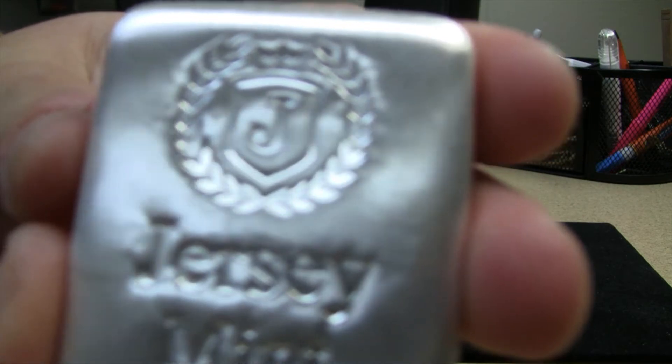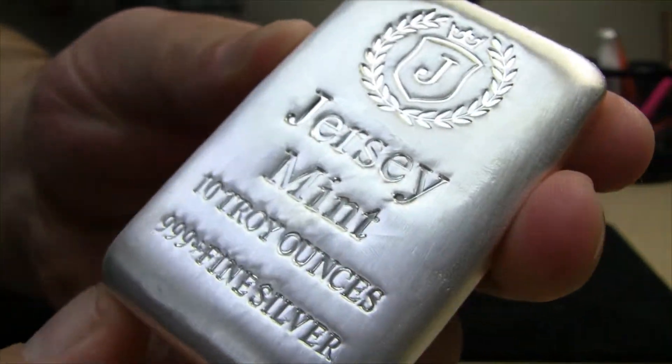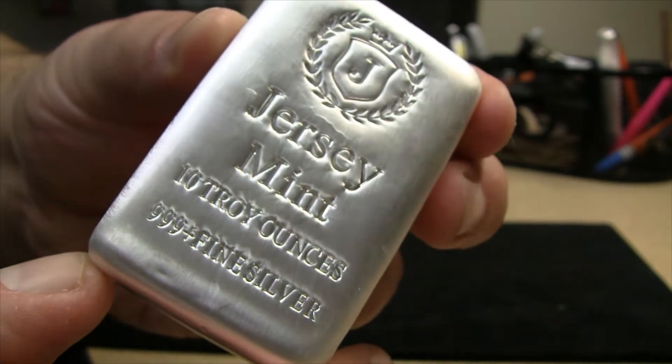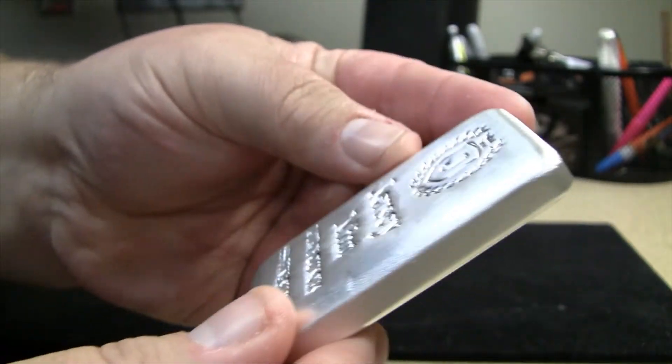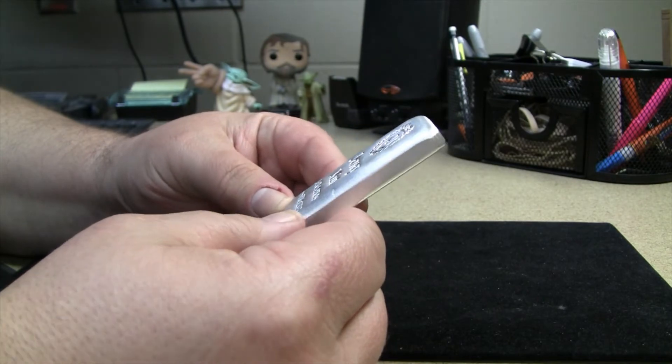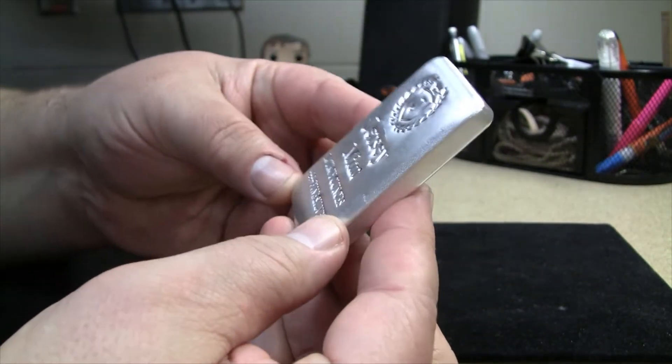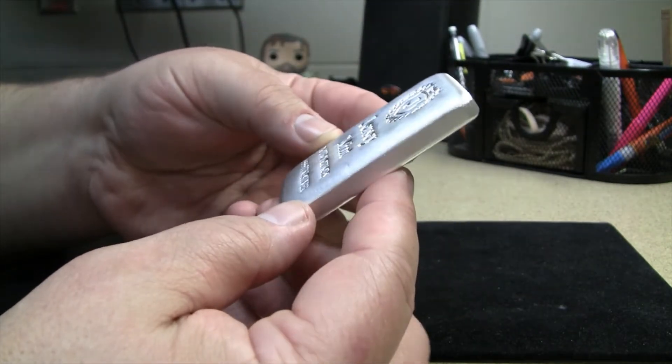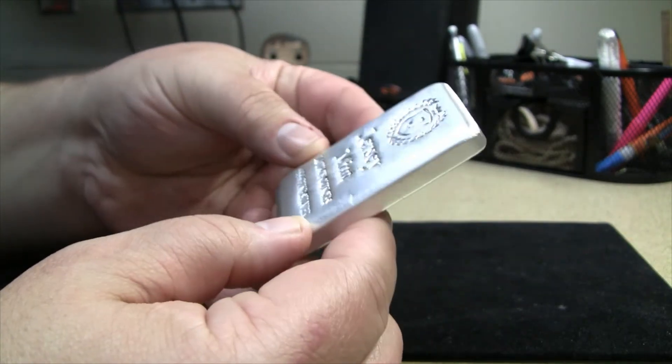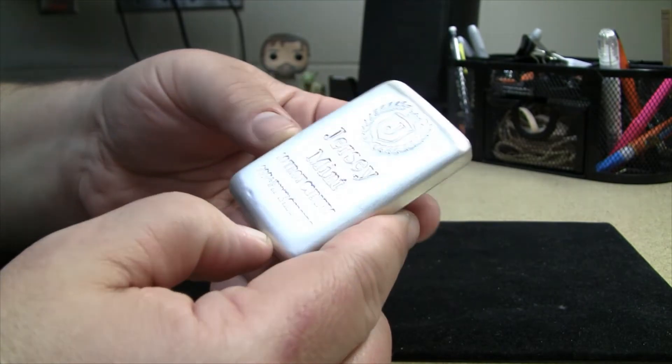Let's take a look at what we have here. Jersey Mint, 10 troy ounces, .999 fine silver. Very thin profile, very smooth, shiny back. Very typical of one of your cast bars. As most times when you get a thin, narrow cast bar like this, it seems like it's heavier than it should be. This is a new bar for my stack. I do not have anything from Jersey Mint yet.